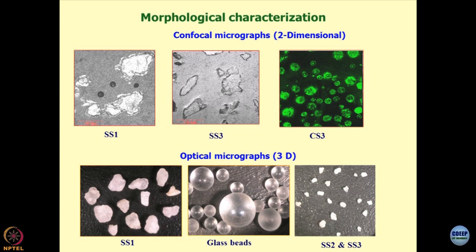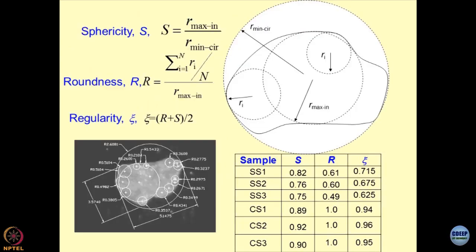SS1 is the coarse sand, SS3 is the fine sand, and there are cenospheres which have peculiar characteristics. In 3D imaging — known as optical micrographs — this is how sands and glass beads look. From this information, we went deep into morphological characterization: each grain has to be photographed. You inscribe as many circles as possible within the grain — it is a game of patience. Once these dimensions are known, you can define the sphericity, roundness, and regularity of the particle. This is the best way to characterize morphology at the microscopic level.